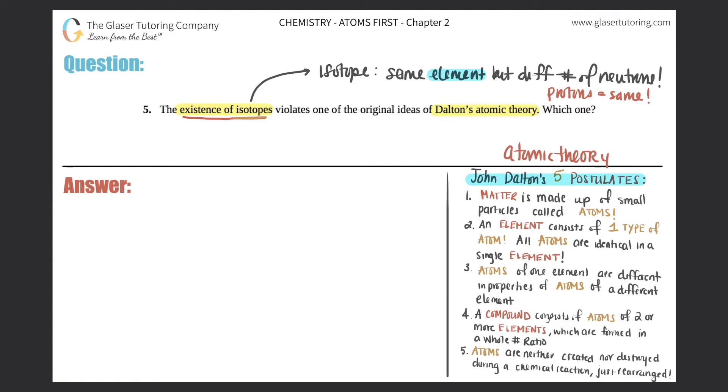So for example, if I have C-12 and C-14, C stands for carbon, right? Now on the periodic table, PT, we should know that carbon has six protons because six is carbon's atomic number.